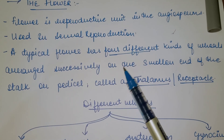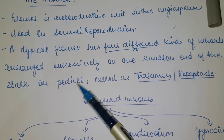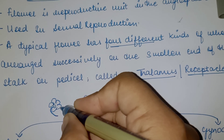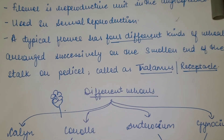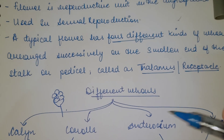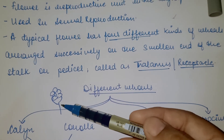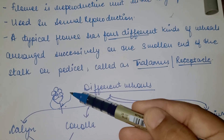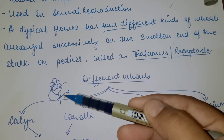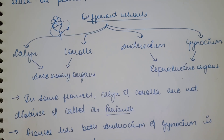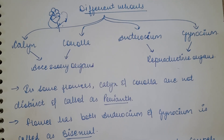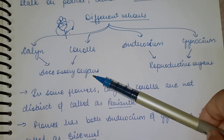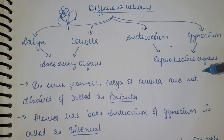These four whorls are arranged successively on the swollen end of the stalk or pedicel. If you look at a flower, below it there is a bud-like structure and then a stem — the whorls are arranged on this swollen part called the pedicel or stock. This complete structure is known as the thalamus or receptacle. The four whorls present in a flower are: Calyx, Corolla, Androecium, and Gynoecium.